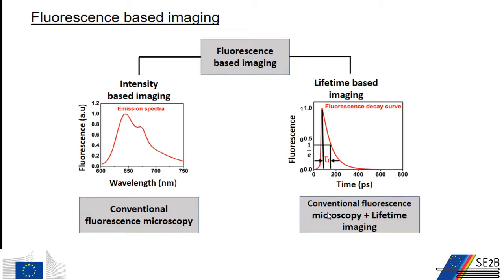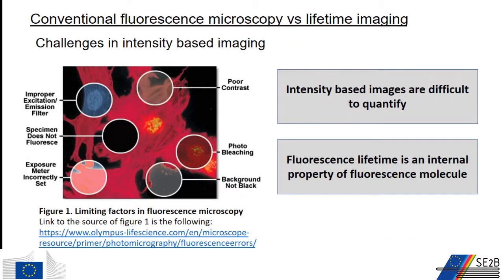The fluorescence intensity and fluorescence lifetime imaging can also be combined. Conventional fluorescence microscopy, which uses fluorescence intensity to create an image of the specimen, is a powerful technique to study the properties of organic and inorganic substances. It is particularly useful to study biological processes at the cellular and subcellular level in real time.